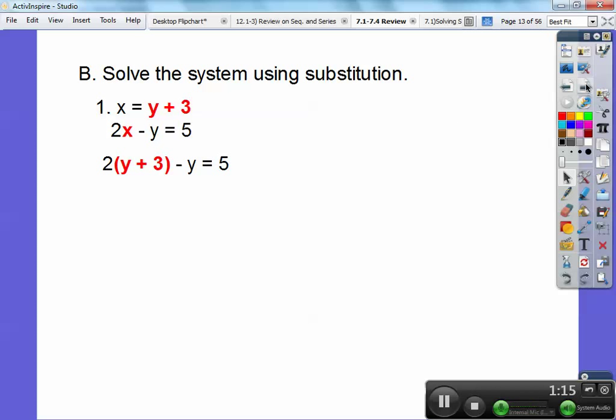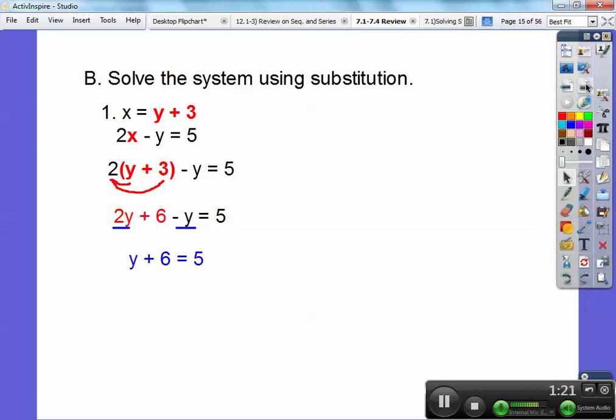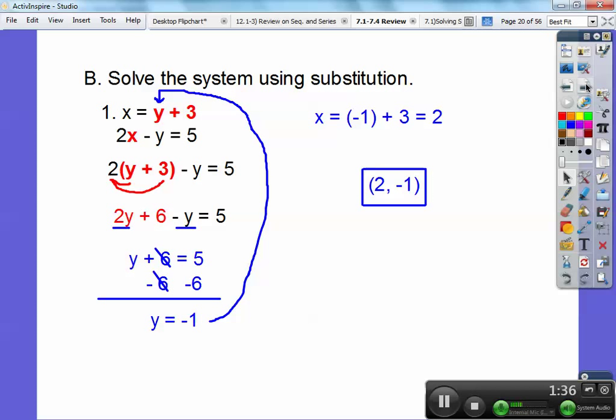And then I'm going to go ahead and distribute the two through, and two y plus six minus that y still equals five. Combine those like terms. So two y minus y is one y plus six equals five. Subtract six, you get y equals negative one. Then you go ahead and plug it right back up where x equals. So x equals negative one plus three or two. So the answer is always x comma y, two comma one.